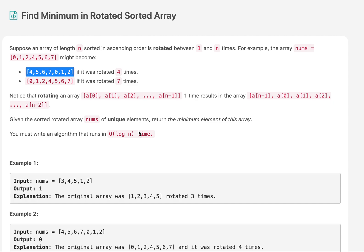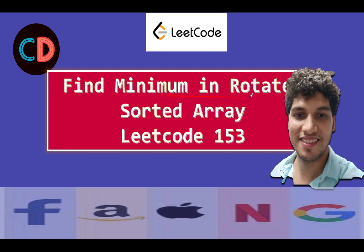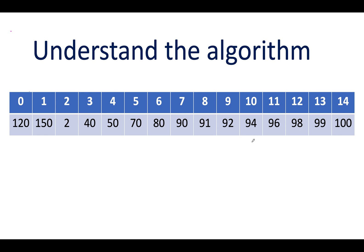Without further ado, let's move to the presentation. This is LeetCode 153 — Find Minimum in Rotated Sorted Array. I've taken a slightly bigger example with elements from index 0 to index 14: 125, 152, 40, 50, 70, 80, 90, 91, 92, 94, 97, 96, 98, 99, 100. The array is rotated about the second index, so we need to return index 2, whose value is also 2 by coincidence.